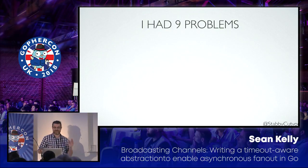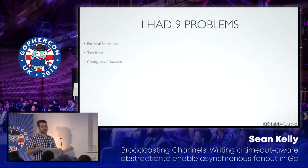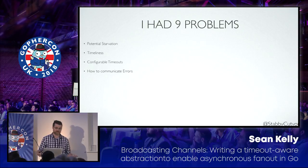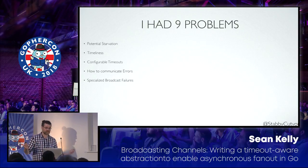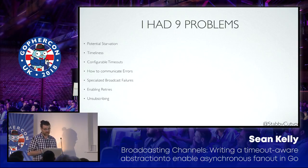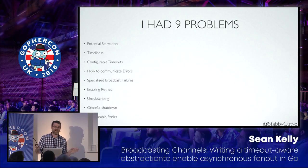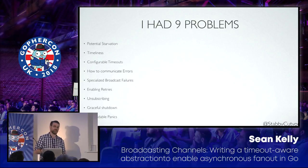To recap, I had nine specific problems: potential starvation, timeliness, configurable timeouts, how to communicate errors, specialized broadcast failure errors, enabling retries — which is really where the library changed how it looked — providing a mechanism for unsubscription, handling graceful shutdown, and ensuring no panics in my code. I can't really control what happens in somebody's own consumer, but I didn't want my own code to panic, because I couldn't deal with the personal hit to my pride.